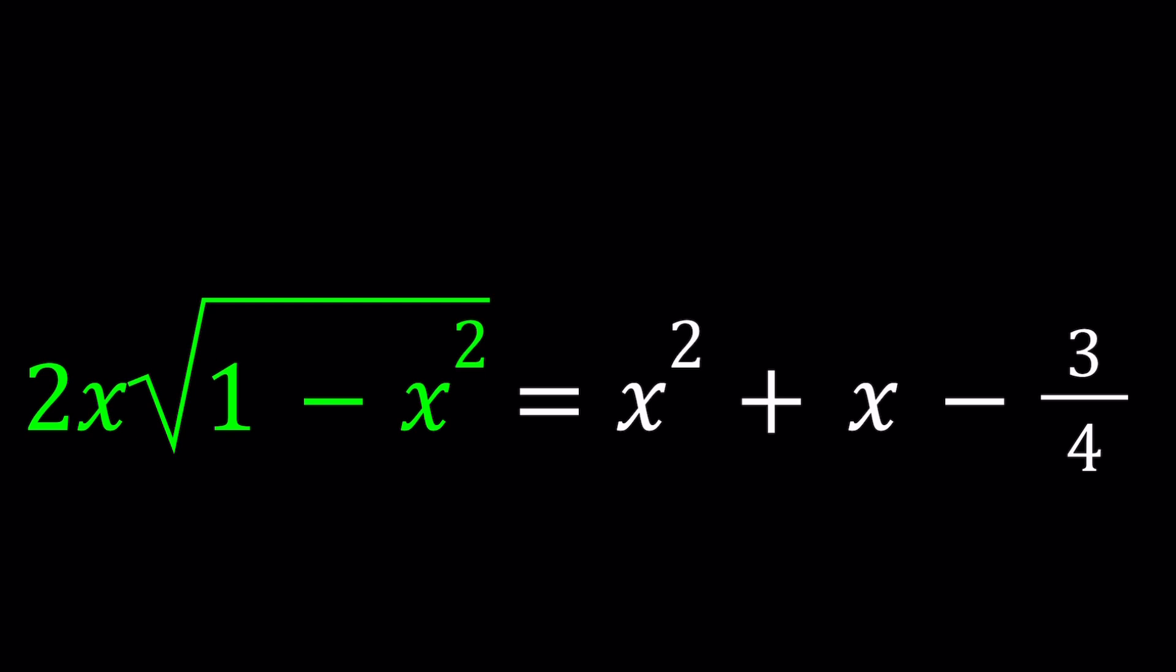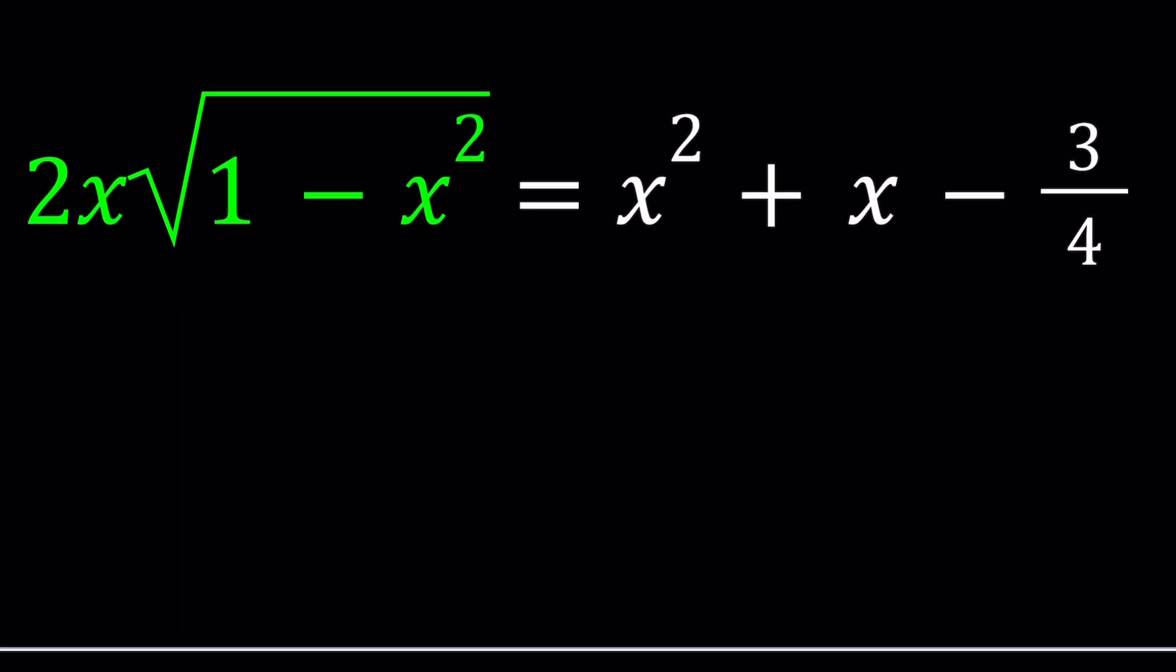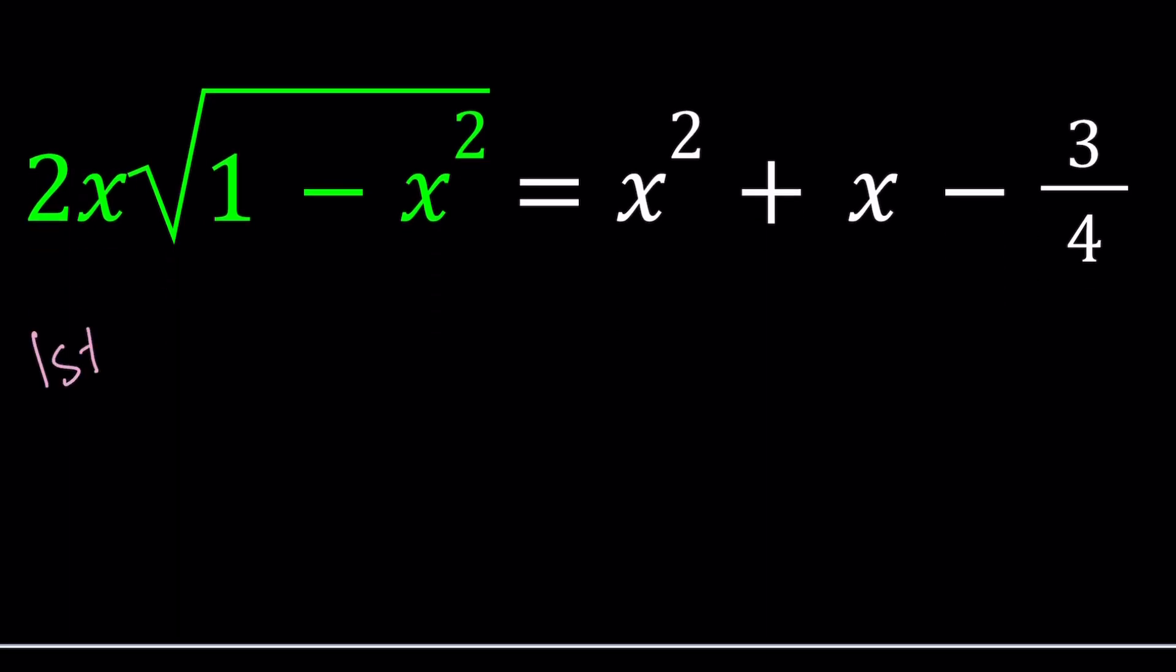So I'll be presenting two methods, and let's start with the first one. For my first method, I want to get rid of the radical. So the easiest way to do that is by squaring both sides.